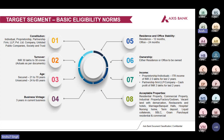Point six is ownership — again an either-or situation: either the office or the residence has to be owned. For income norms: for proprietorship and individuals, ITR income of 2.5 lakhs for the past two years; for partnership, LLP, and company, cash profit of 3 lakhs for the past two years. For acceptable properties under secured products, we take residential, commercial, industrial property, factories, godowns, and everything listed under point eight.